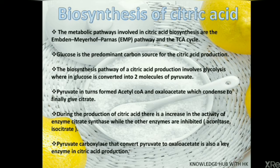Biosynthesis of Citric Acid: The metabolic pathways involved in citric acid biosynthesis are the EMP pathway and TCA cycle. Glucose is the predominant carbon source for citric acid production. The biosynthesis pathway involves glycolysis, where glucose is converted into two molecules of pyruvate. Pyruvate in turn forms acetyl-CoA and oxaloacetate, which condense to finally give citrate. During the production of citric acid, there is an increase in the activity of the enzyme citrate synthase, while other enzymes are inhibited, like aconitase and isocitrate. Pyruvate carboxylase, which converts pyruvate to oxaloacetate, is also a key enzyme in citric acid production.